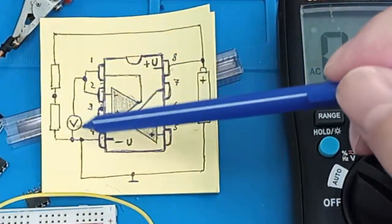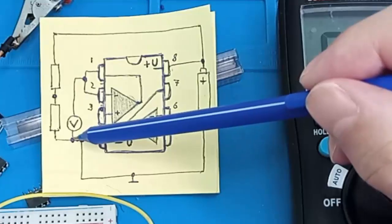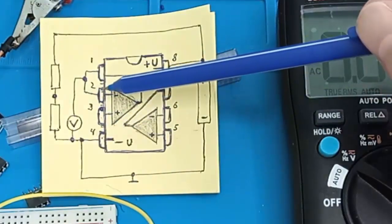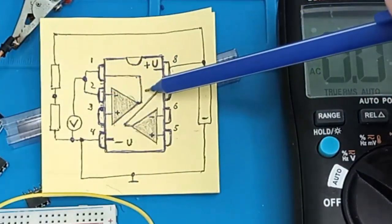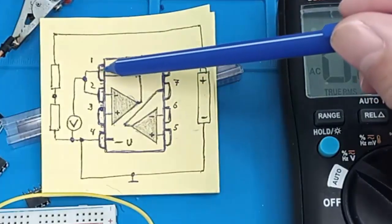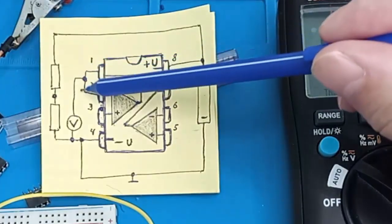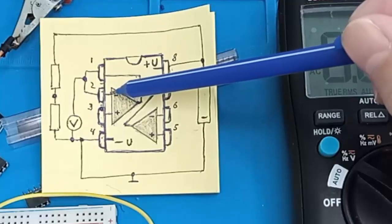The measuring device is connected to the negative wire of the power supply and to the output of the operational amplifier. The output of the op amp is connected to the inverter input. Based on the principle of a buffer repeater.